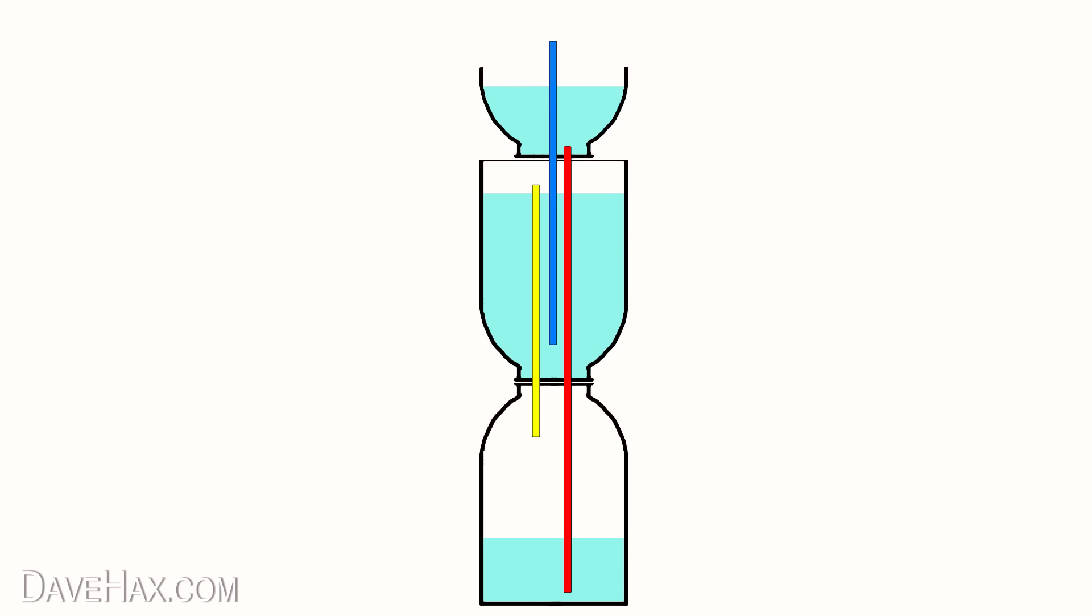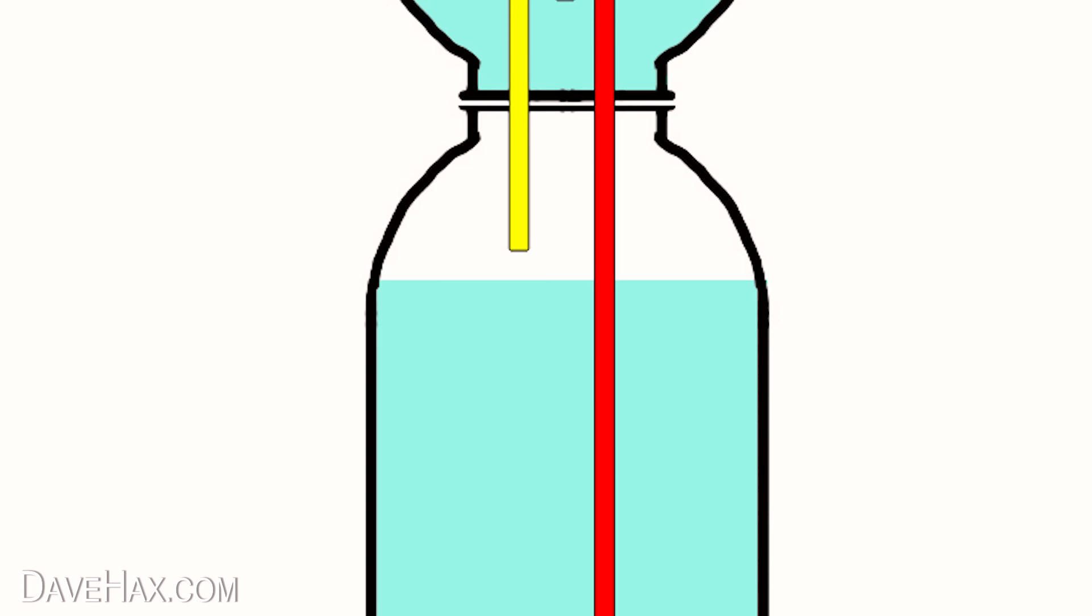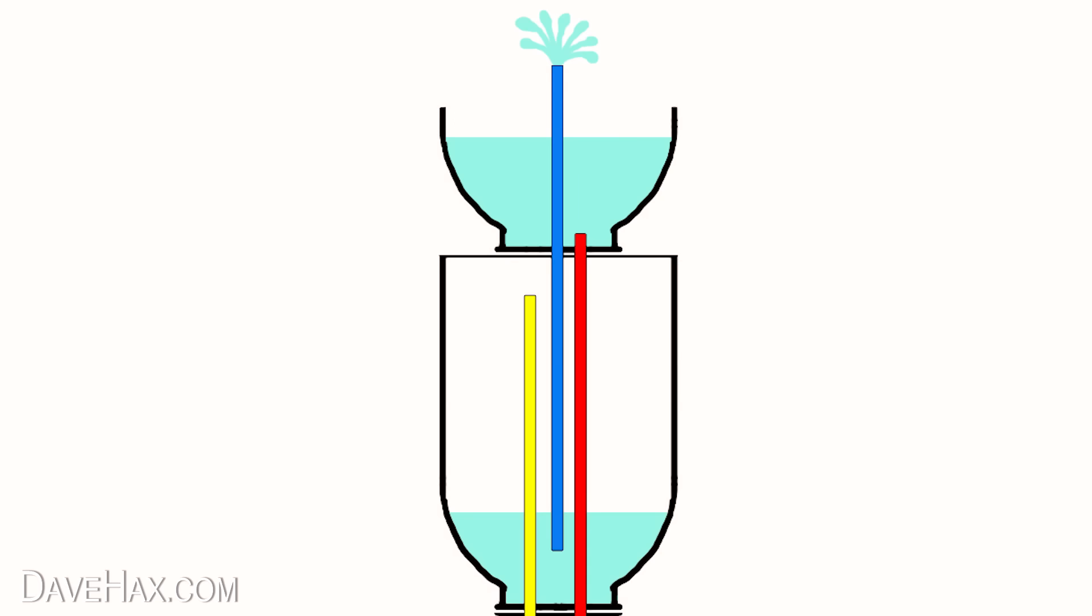Pushing it up through the yellow straw into the middle bottle. The pressure increases and pushes the water in this bottle up through the blue straw, resulting in a fountain which continues to feed itself until either the water level in the bottom bottle rises higher than the yellow straw or the water level in the middle bottle falls below the blue straw.